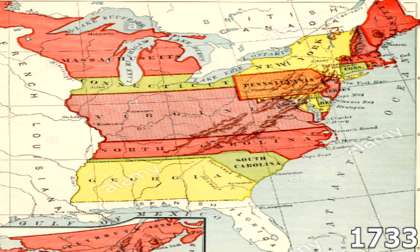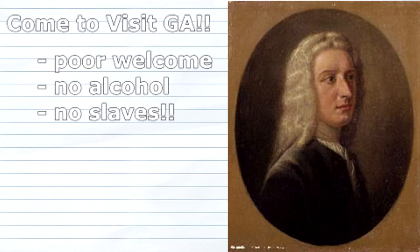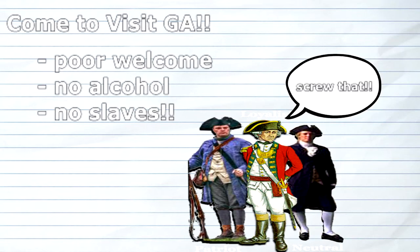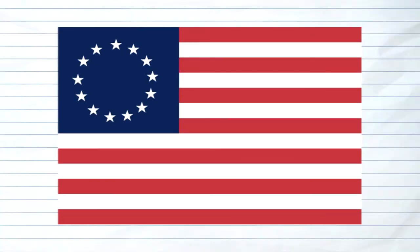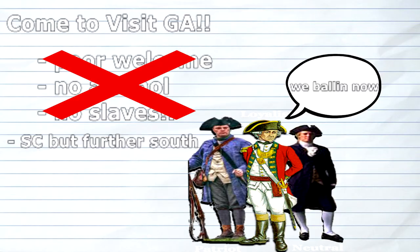Georgia was created in the 1730s as a buffer between Florida and South Carolina, chartered to James Oglethorpe in 1733. Intending it to be a moral safe haven for the poor, James abolished alcohol and slavery, which colonists weren't pleased about. In 1751, James gave up on humanity and sold Georgia back to the crown, where slavery and alcoholism were quickly returned and Georgia basically became South Carolina Jr.